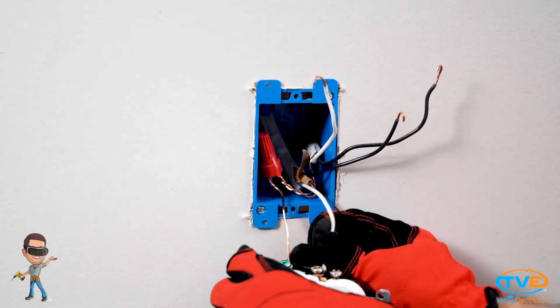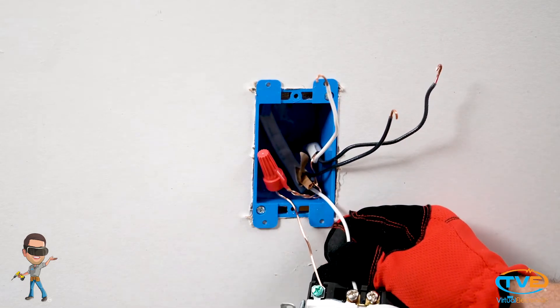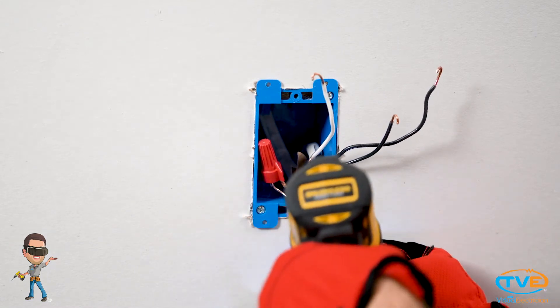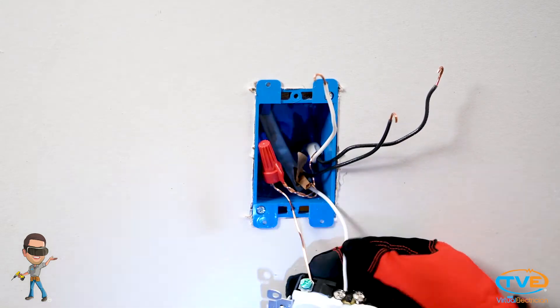Next, you want to do the neutral wires. The neutral wires will go on the silver screws. They should be on the same side as your ground screw is on.